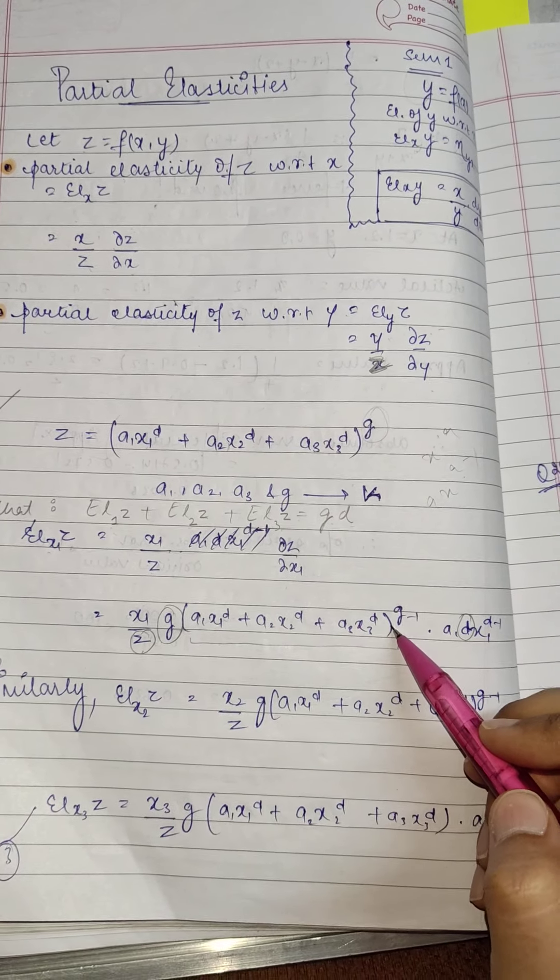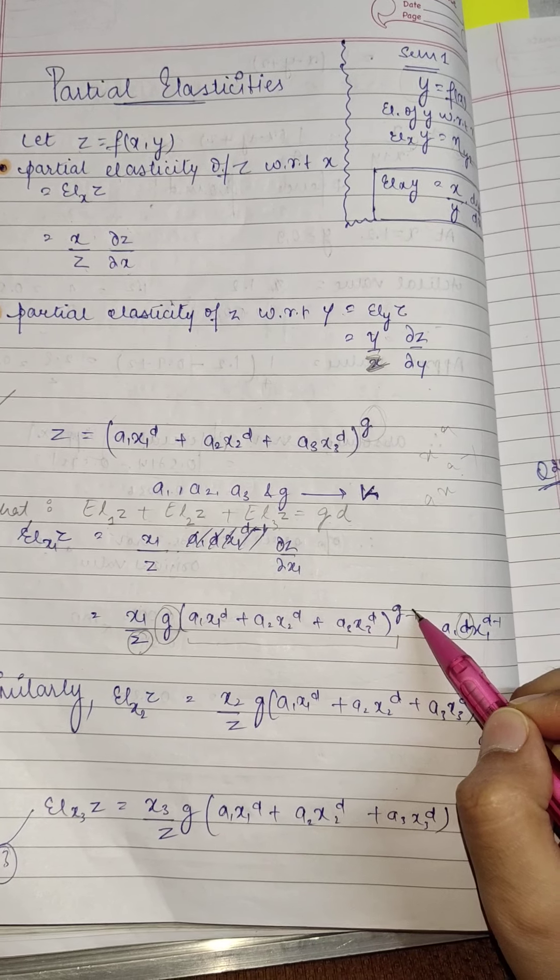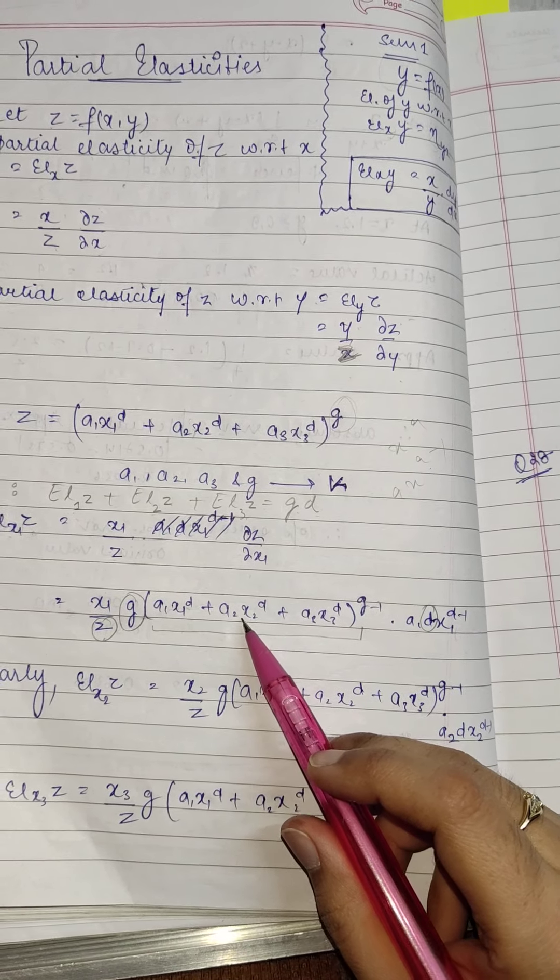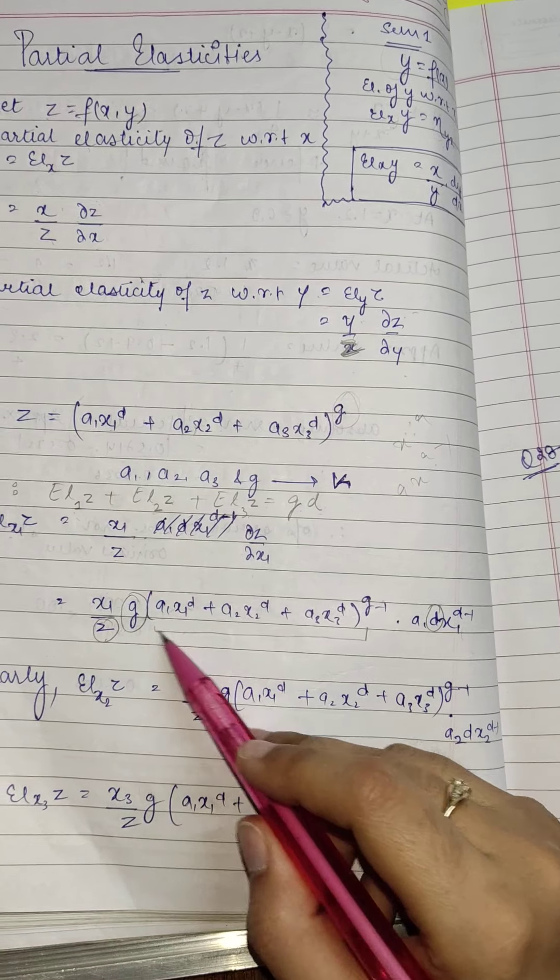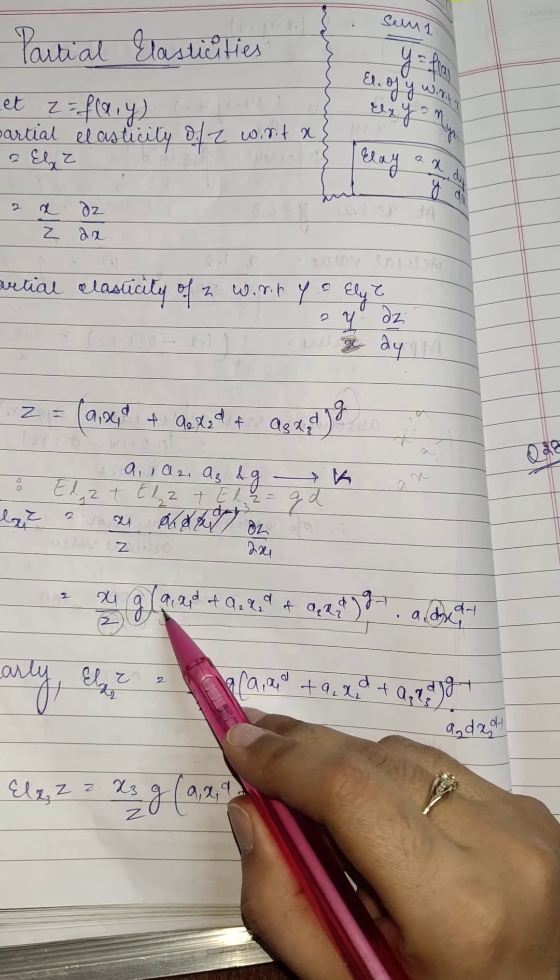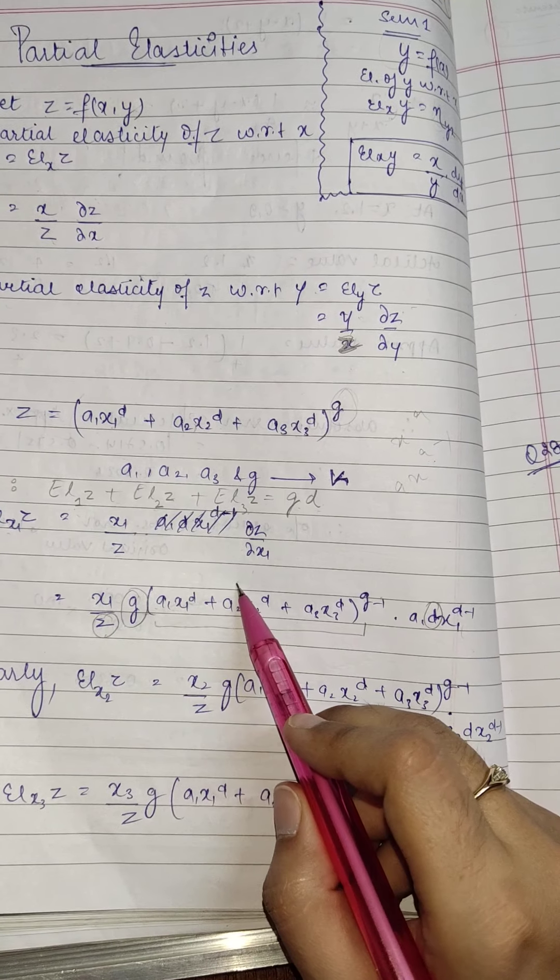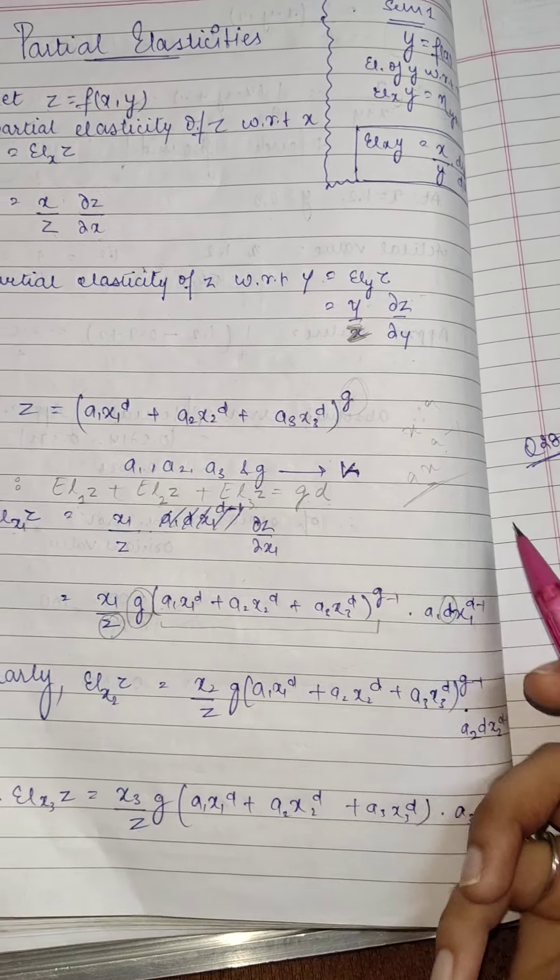So g comes over here, entire term is like this only, to the power g minus 1, then using chain rule will further derivate the term involving x1. So that will be a1 times d times x1 to the power d minus 1, again using this formula.